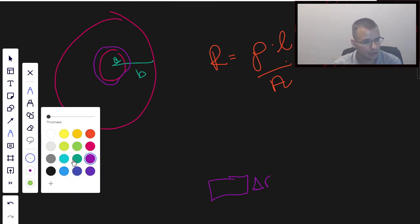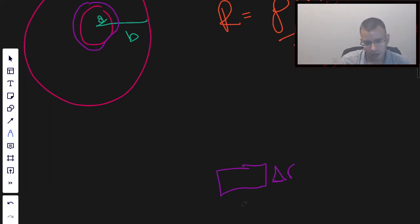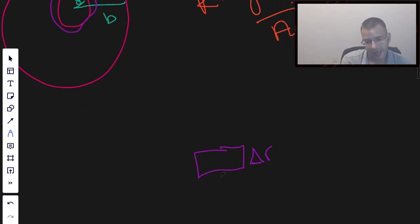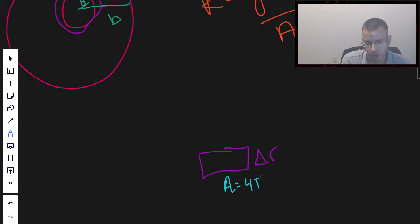And the area, I can use either the inside area or the outside area. It doesn't matter because they'll be similar. And this area right here is going to be the area of a sphere, which is 4πR².